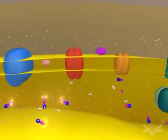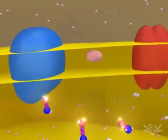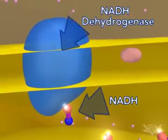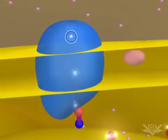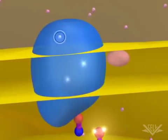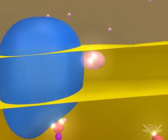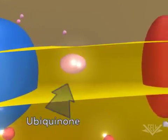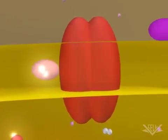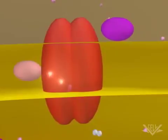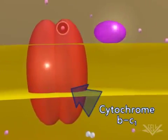At the start of the electron transport chain, two electrons are passed from NADH into the NADH dehydrogenase complex. Coupled with this transfer is the pumping of one hydrogen ion for each electron. Next, the two electrons are transferred to ubiquinone.